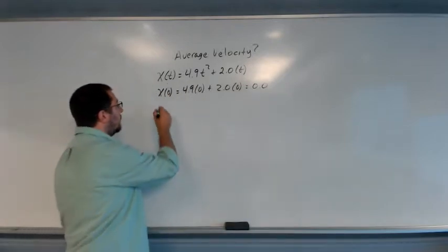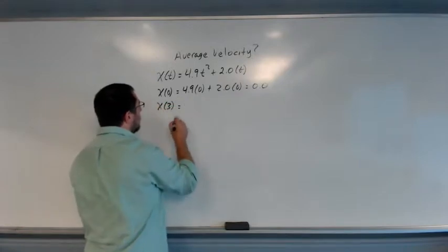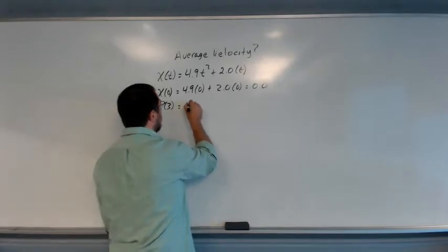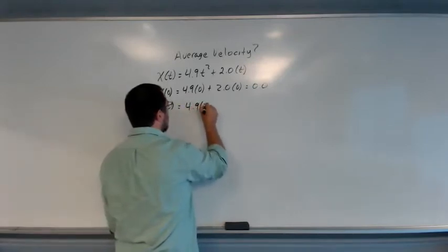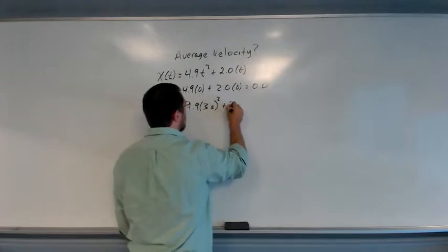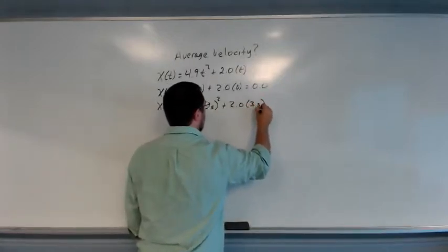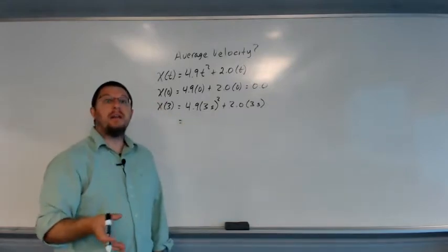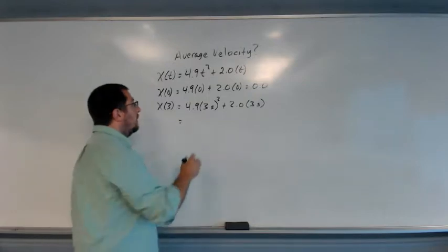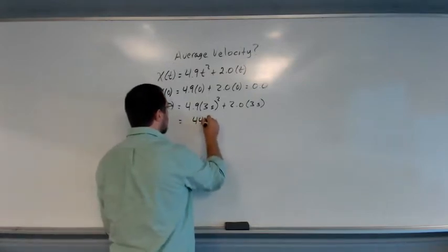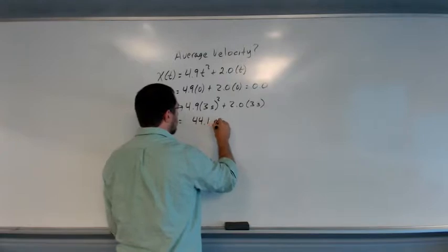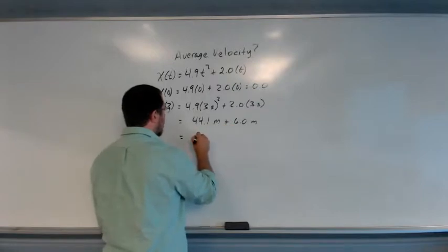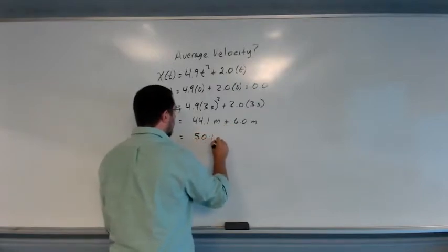And then we're going to calculate the final position after three seconds, which is going to be 4.9 times 3 squared. 3 squared is 9. 9 times 4.9 is 44.1. And so this is going to be 50.1 meters.